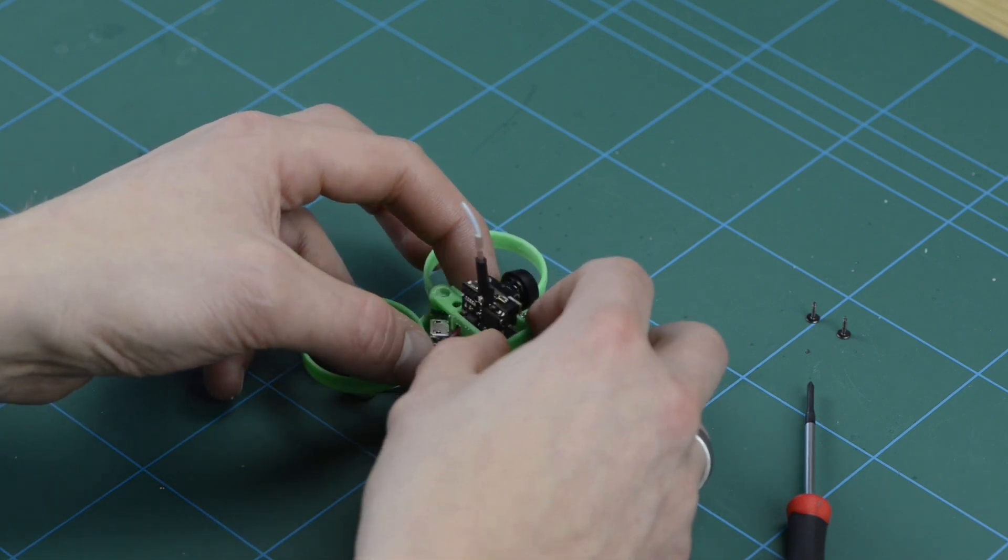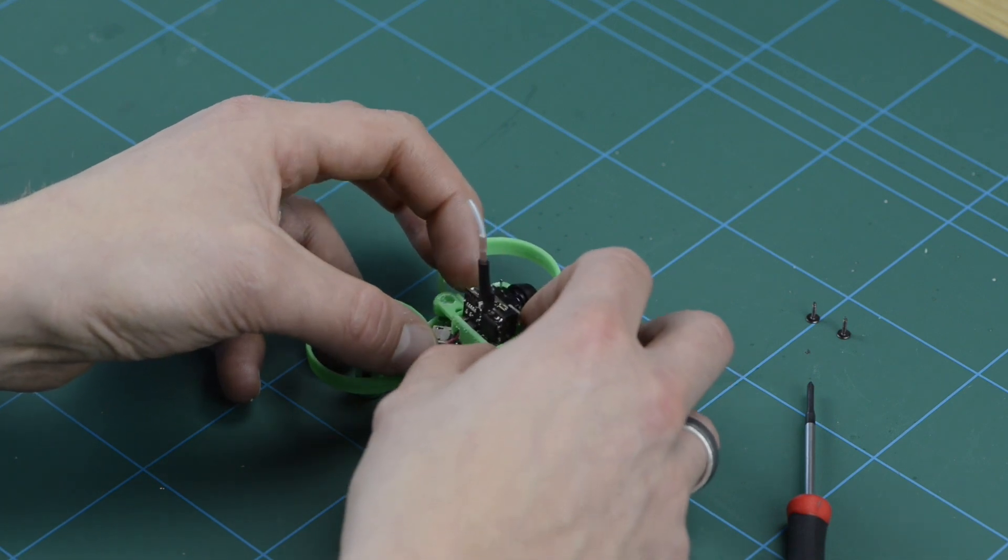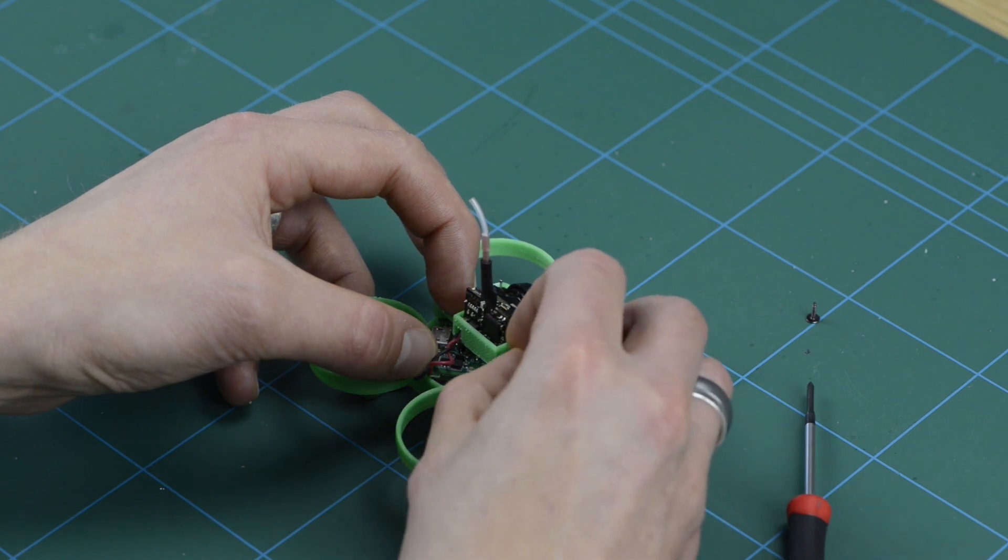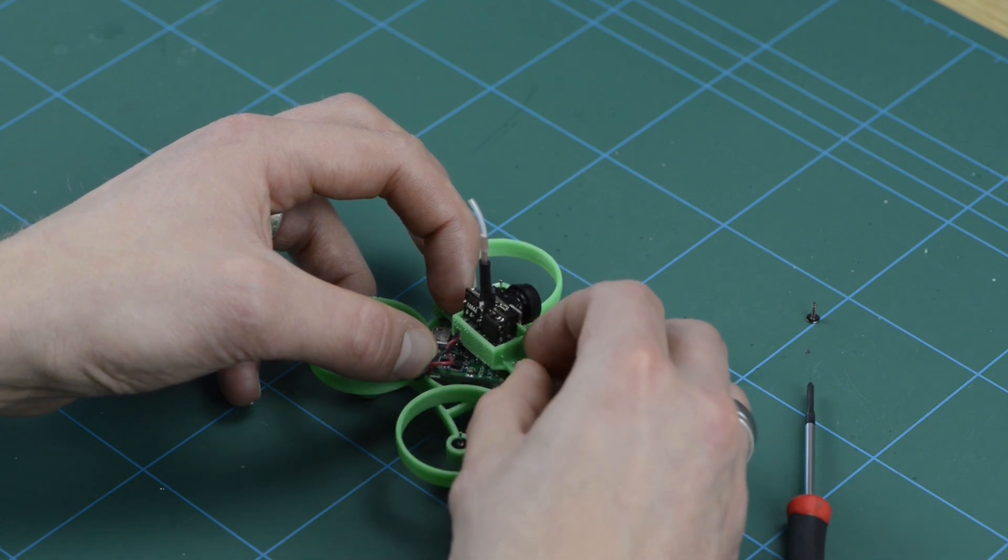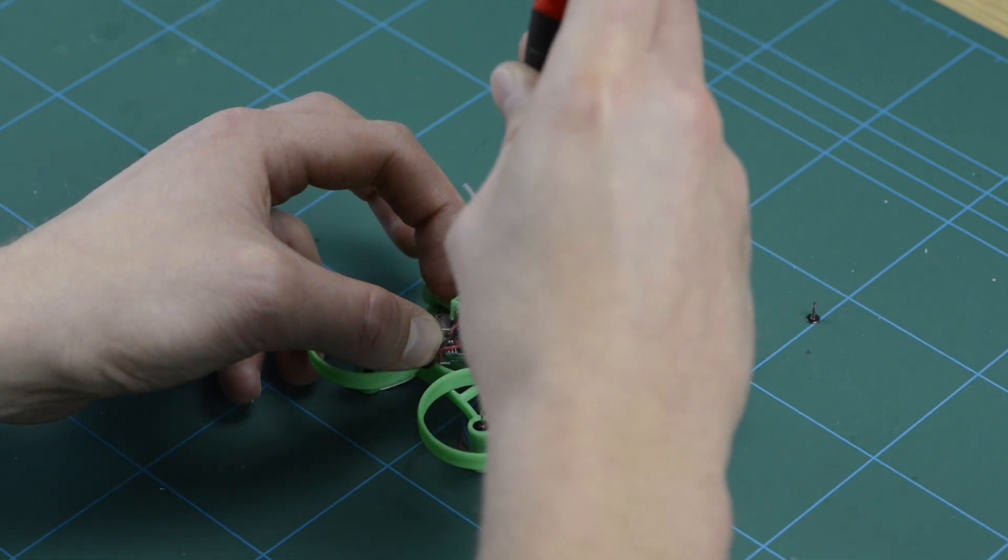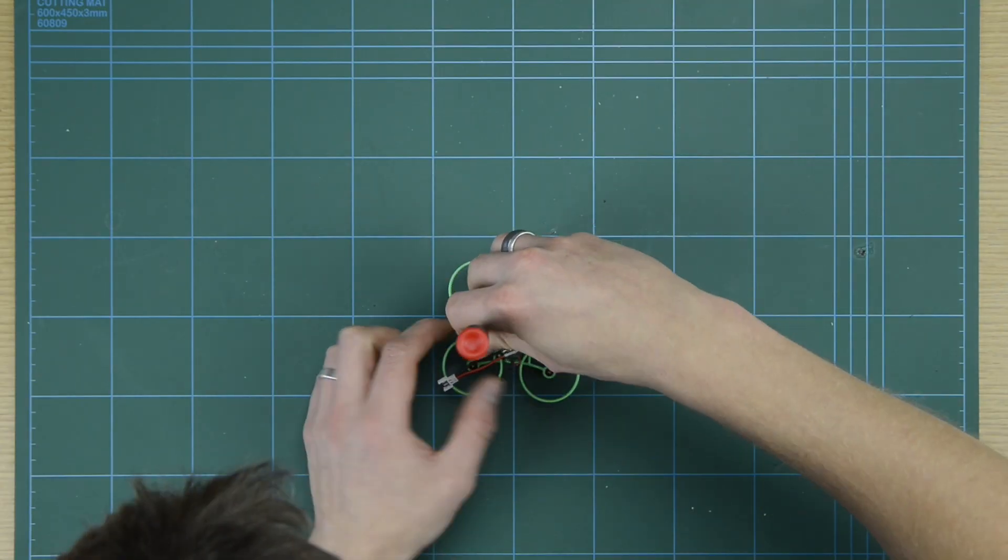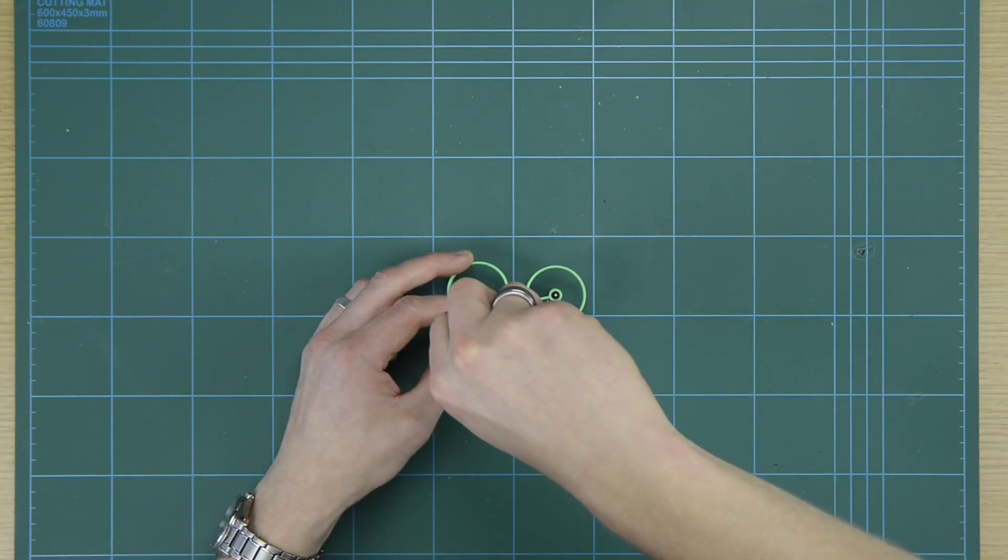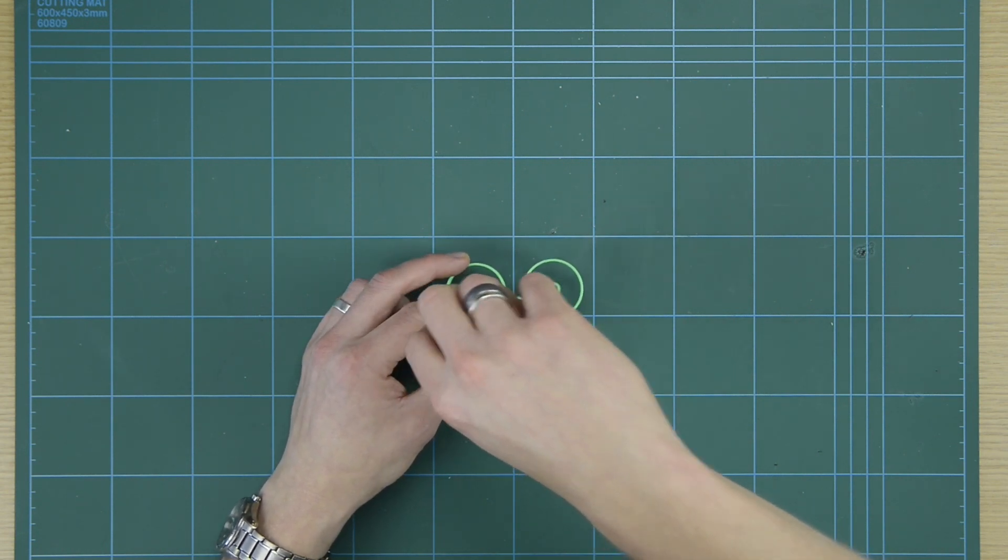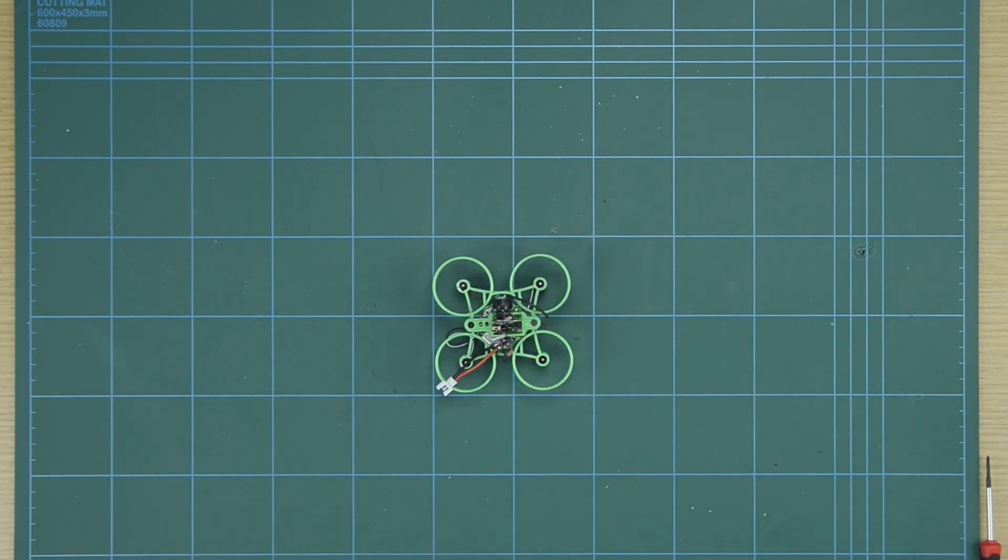Bring your camera mount round and over the top because you're going to be using the same screws to hold your camera and fix the flight controller down. And you can then screw those in. Make sure you haven't trapped any of the wires and that the antenna is free. And the flight controller and camera are mounted.